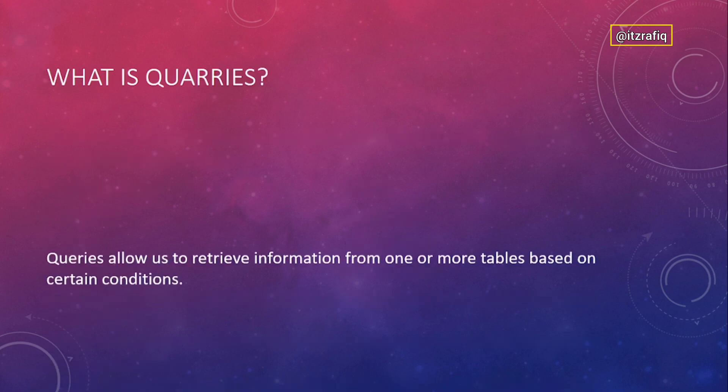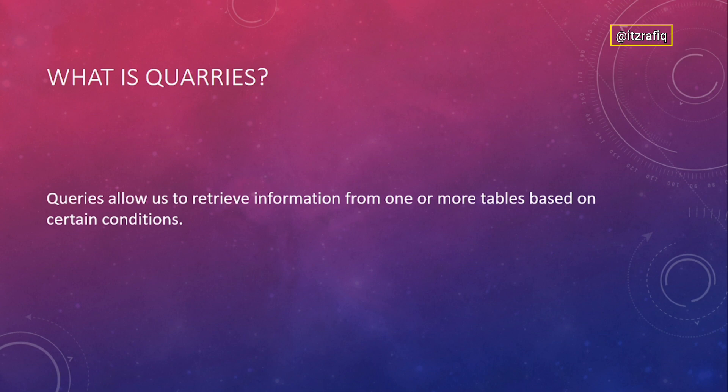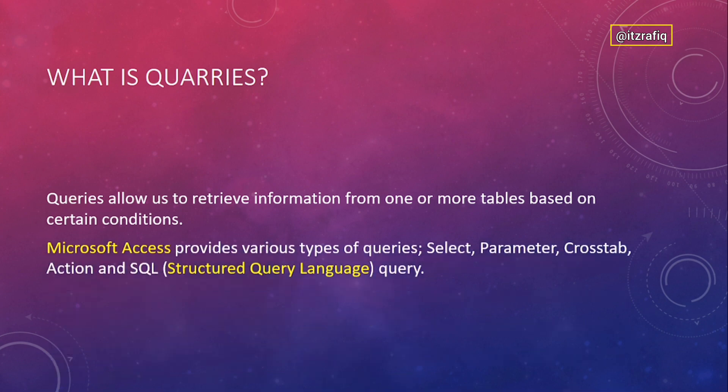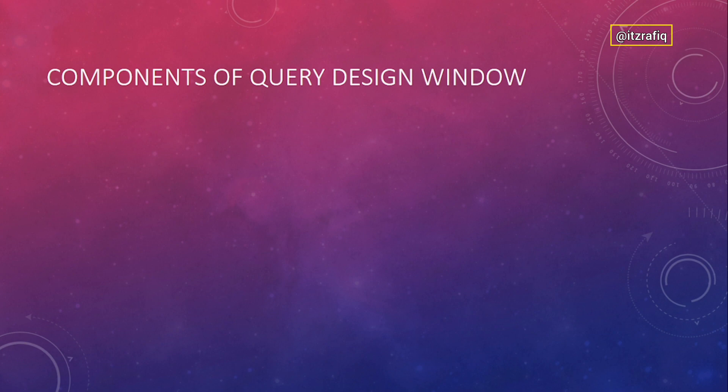Queries allow us to retrieve information from one or more tables based on certain conditions. MS Access provides various types of queries: Select Query, Parameter Query, Crosstab Query, Action Query, and SQL Query. Just remember the names and their uses.